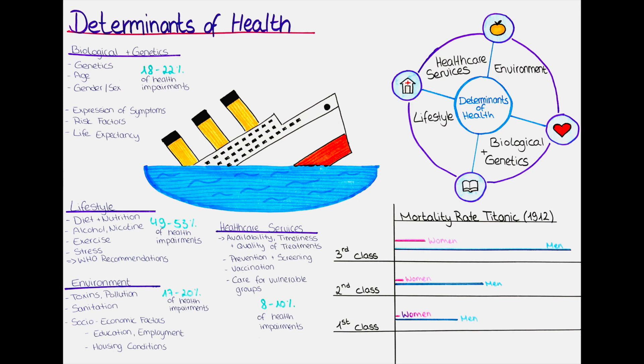What is a healthy weight? The WHO recommends that adults maintain a healthy body weight by keeping their body mass index between 18.5 and 24.9 kg per square meter. BMI is a measure of body weight relative to height and is calculated by dividing a person's weight in kg by the square of their height in meters.